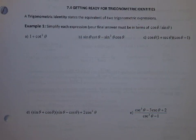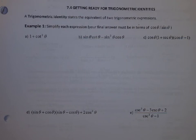So 7.4, getting ready for trig identities. What is a trig identity? It states the equivalence of two trigonometric expressions.